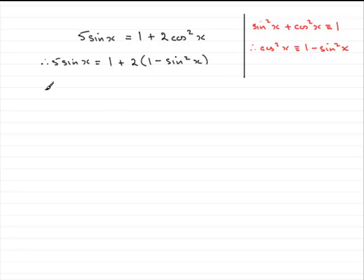So we now need to expand the bracket. We've got 1 plus, and then if we expand this, we've got 2 times 1 is 2, and 2 times minus sine squared x is minus 2 sine squared x.